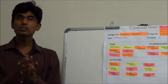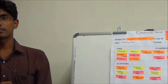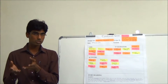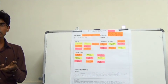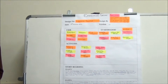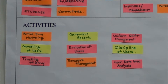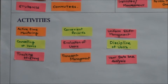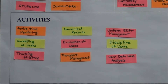What kind of activities are related with the attendance process? For example, why we are keeping the attendance or records — to monitor the person or user. We have listed out activities such as active time monitoring, at which time a person logs in to the institute or factory and at which time he goes outside. Also, convenient record keeping to evaluate any person, counselling of users, and tracking history of any user.